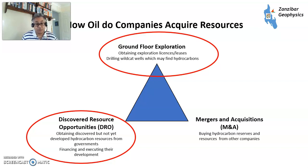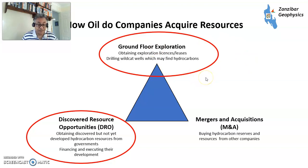So how do all companies acquire resources? There are three basic methods. There's mergers and acquisitions — buying resources from other companies. Discovered resource opportunities, which is a special type of licensing round where a field which has already been discovered is put up for licensing. And ground floor exploration, where you get a new license and drill a wildcat exploration well which may or may not find hydrocarbon — the riskiest but potentially the largest rewards.